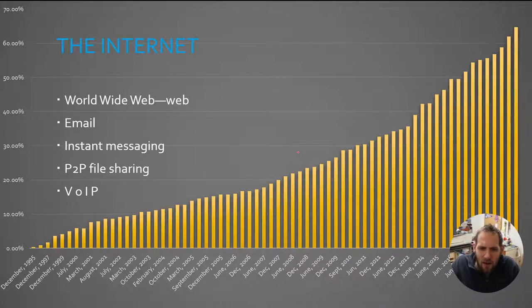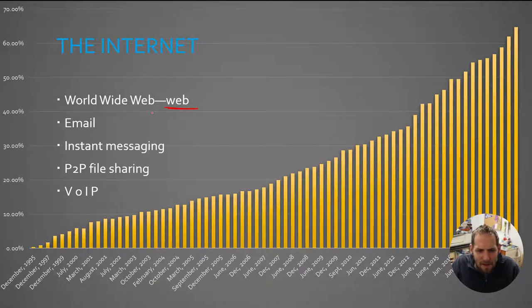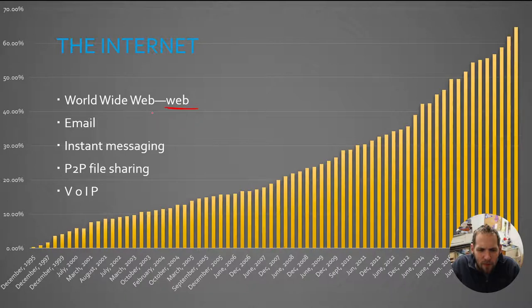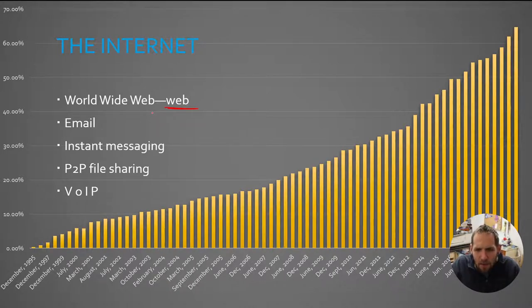The internet and the World Wide Web are often used as the exact same thing, but they're actually completely different entities. The internet is a network of computer networks, where the World Wide Web is only one of the uses of the internet. The internet is what actually does all the connecting — all the backbones — and then the World Wide Web is what we typically see when someone says 'just go on the internet.'